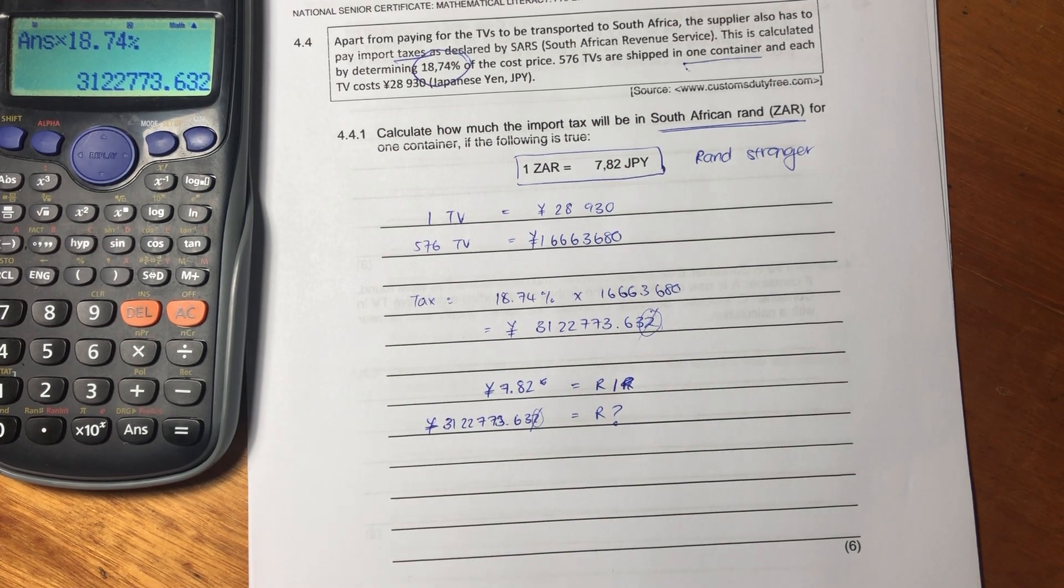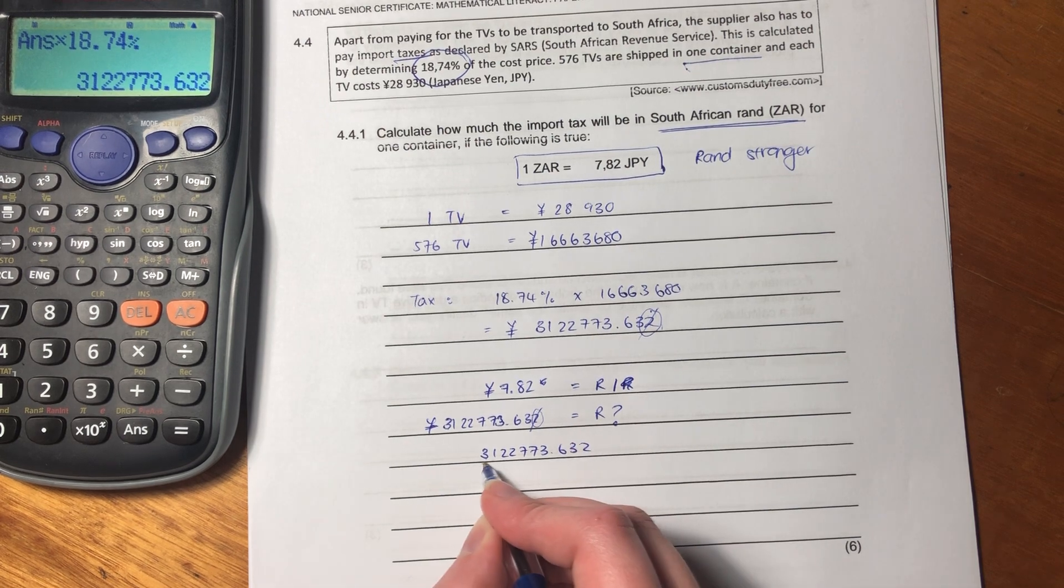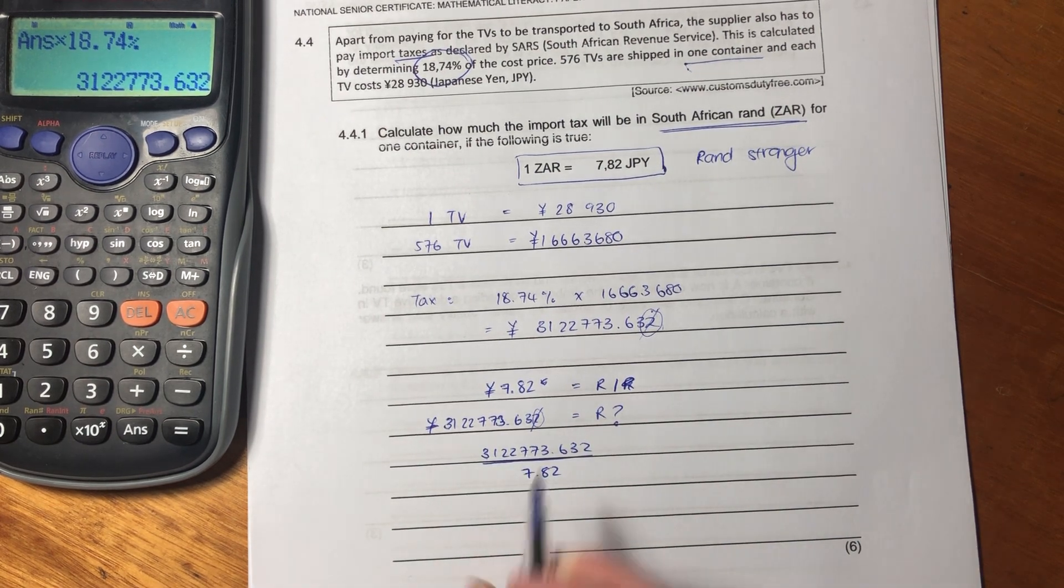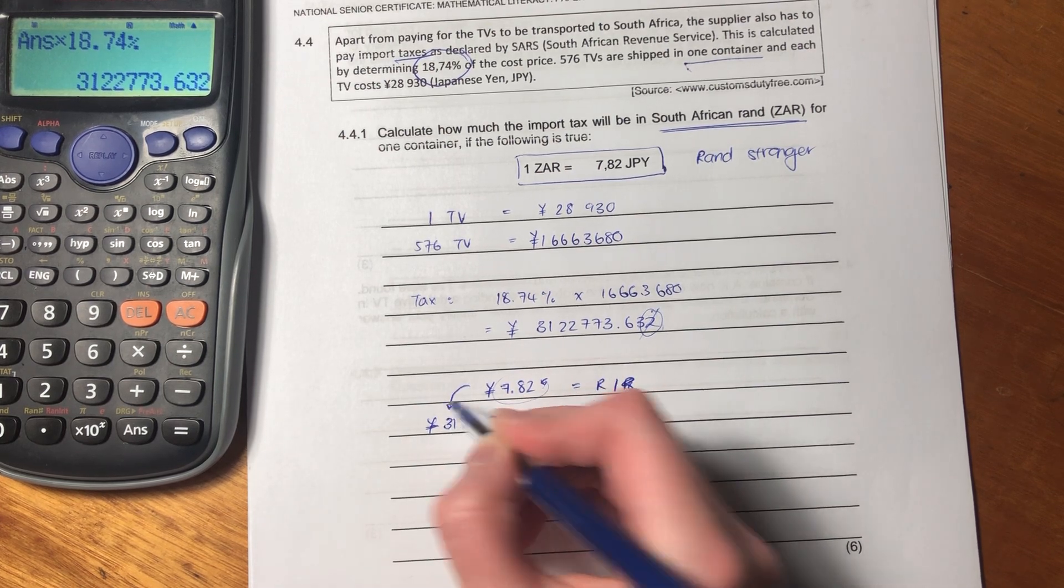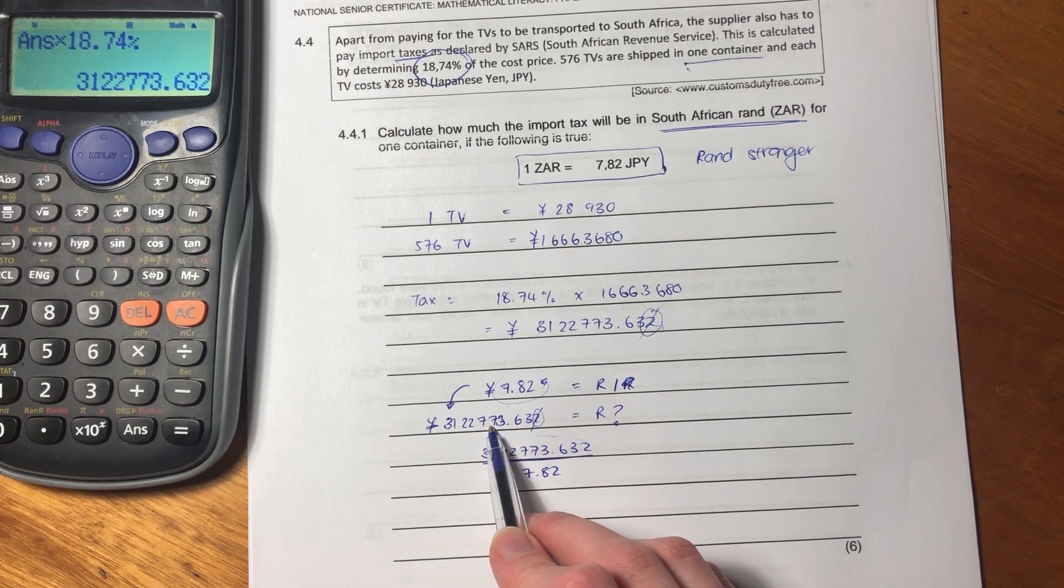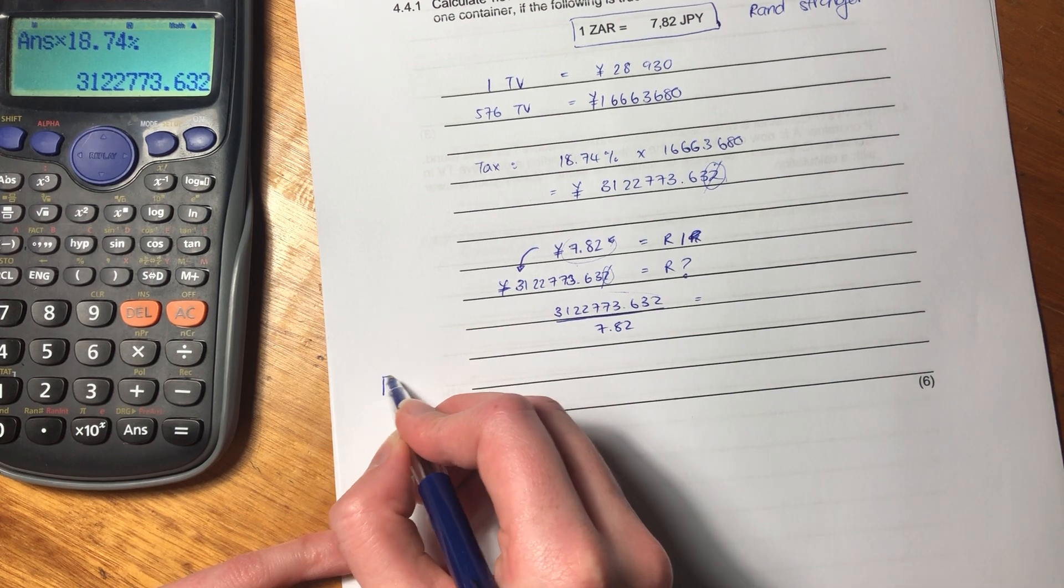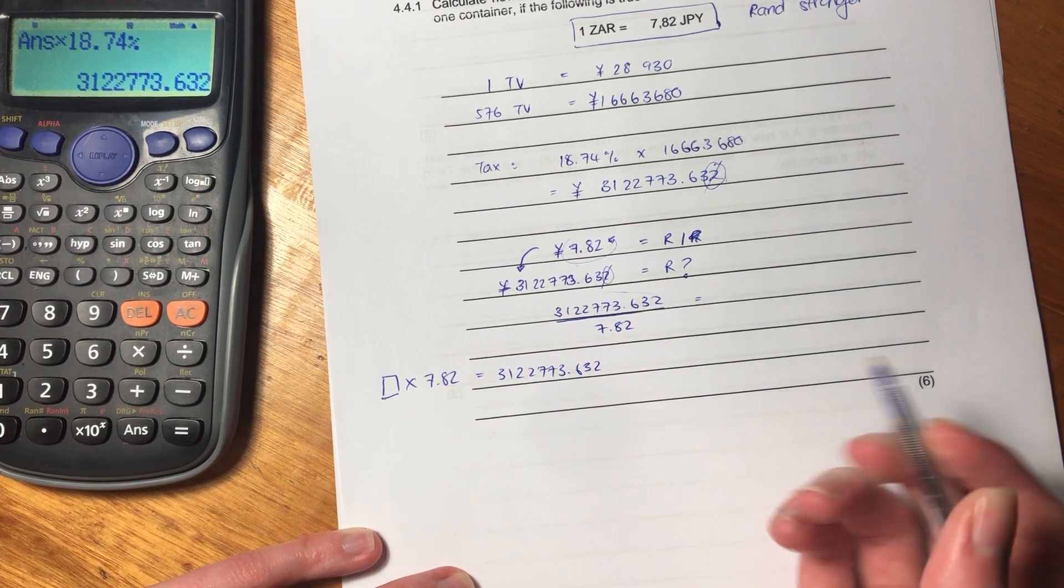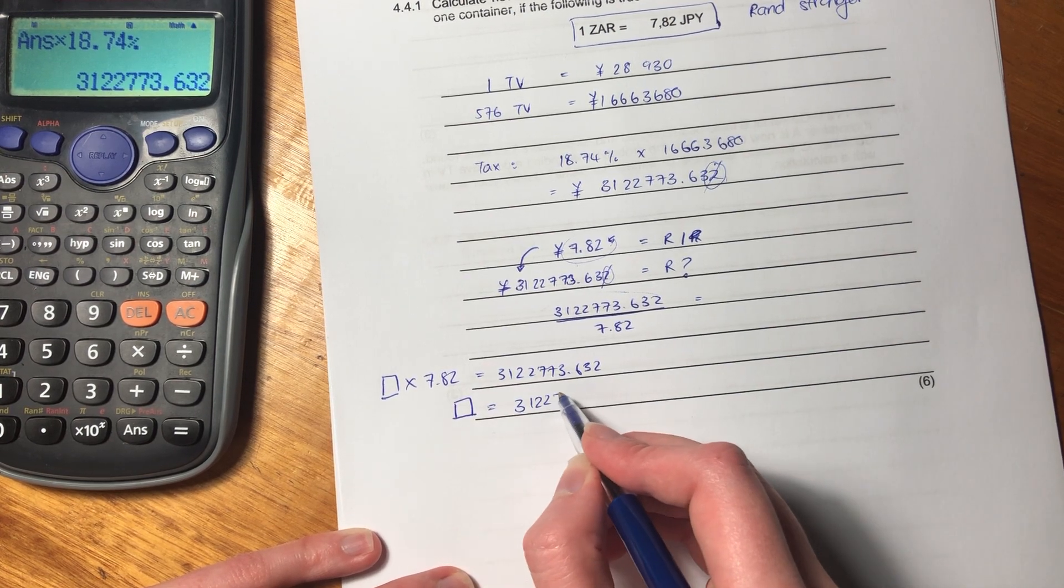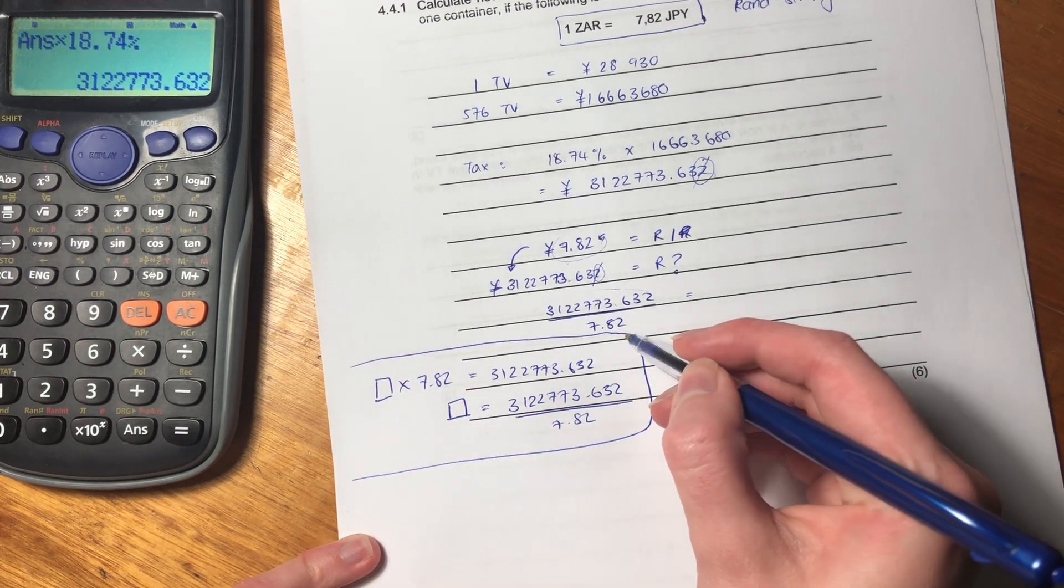So we want to know how many rand that is. So what we're going to do is we're going to say, well, if we say 3122773.632, and we divide that by 7.82, right? I'm dividing it by that. Now, you could be saying, well, why? Why do you do that? That's always the thing I get wrong. But what I'm effectively saying here, I'm saying, what do I have to multiply 7.82 by to get to 3122773.632, right? That is what this effectively says. Let me just rewrite it in another way for you. I'm saying something, so I'm just saying a box times by 7.82 has to equal 3122773.632. And saying, well, if I want to get that box by itself, I have to say 3122773.632 divided by 7.82.